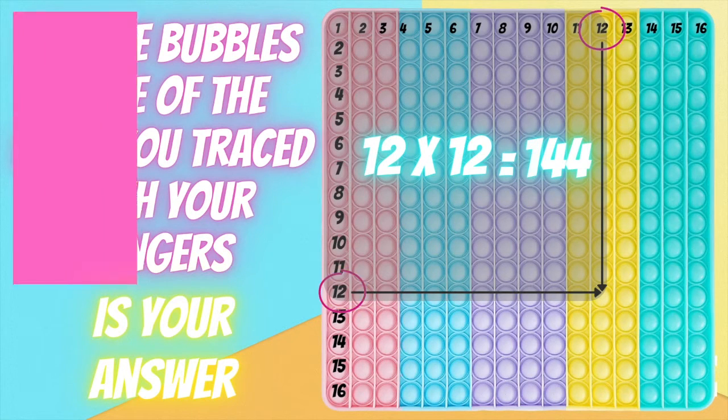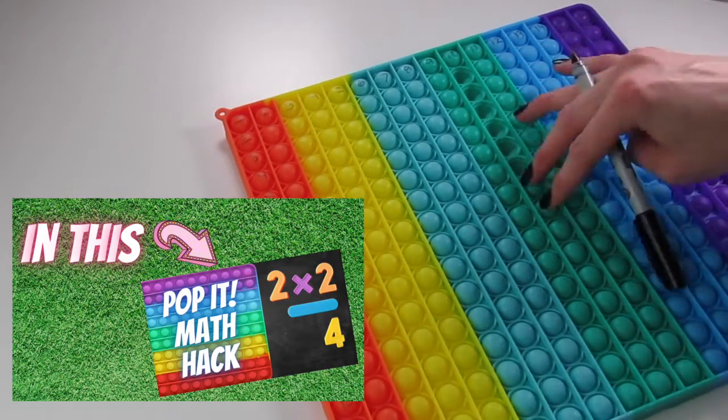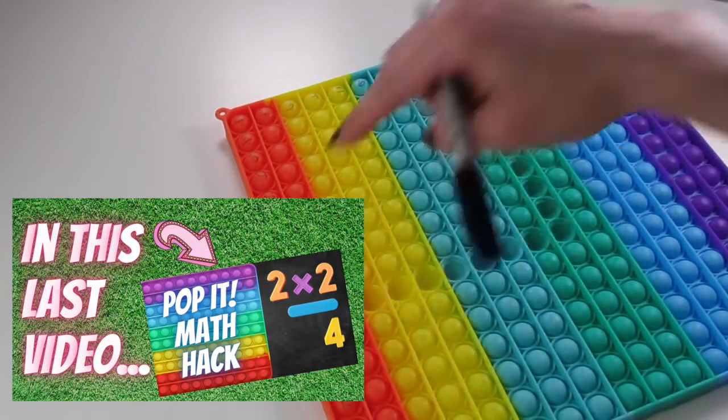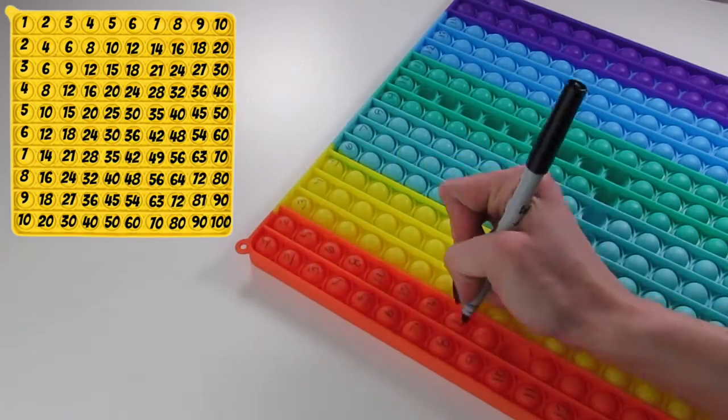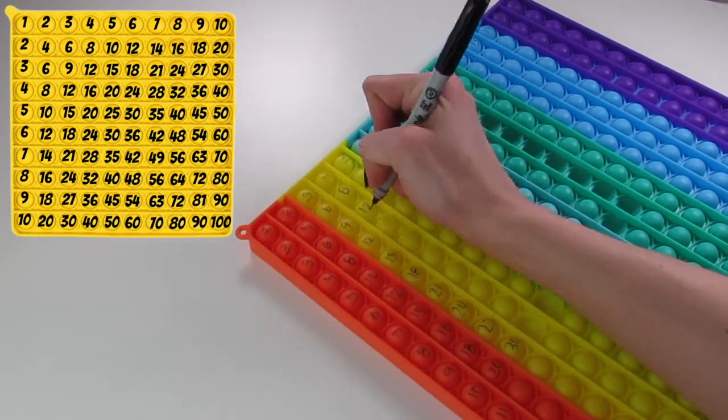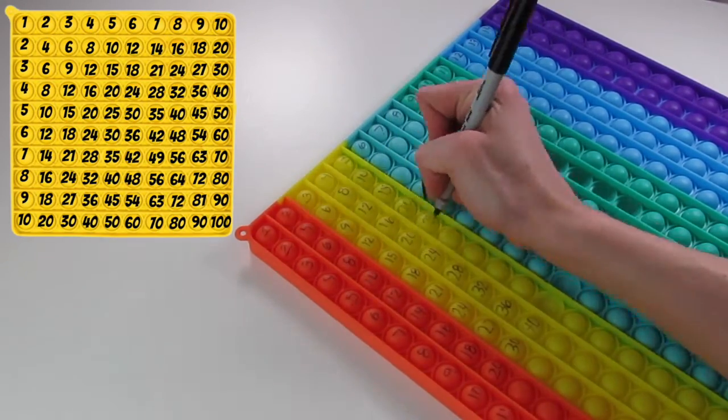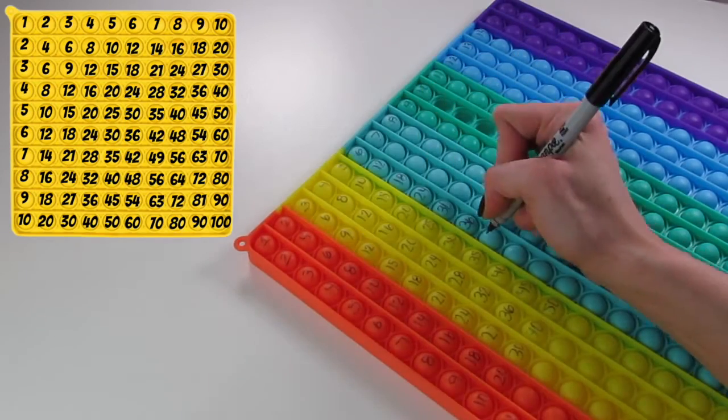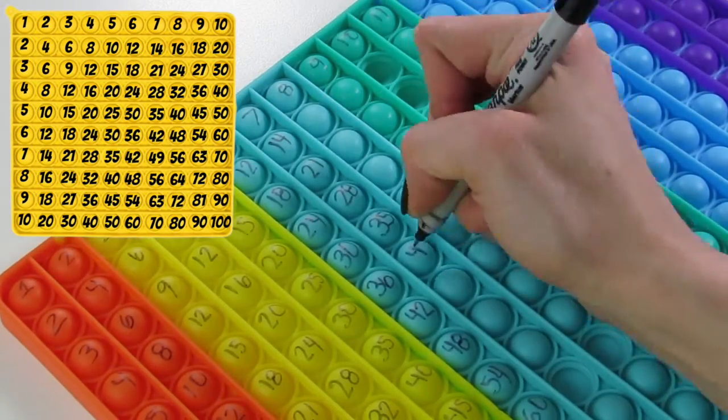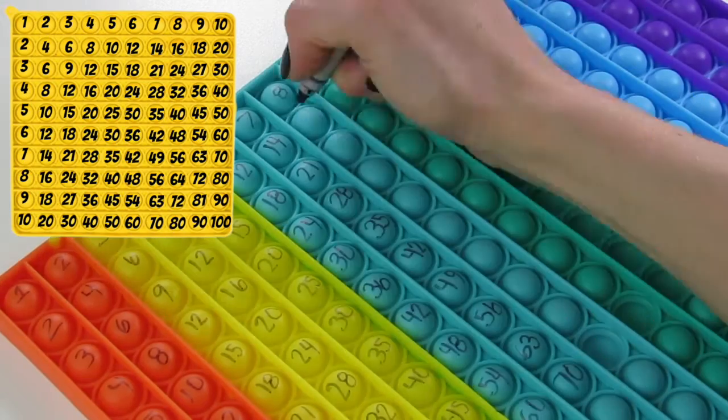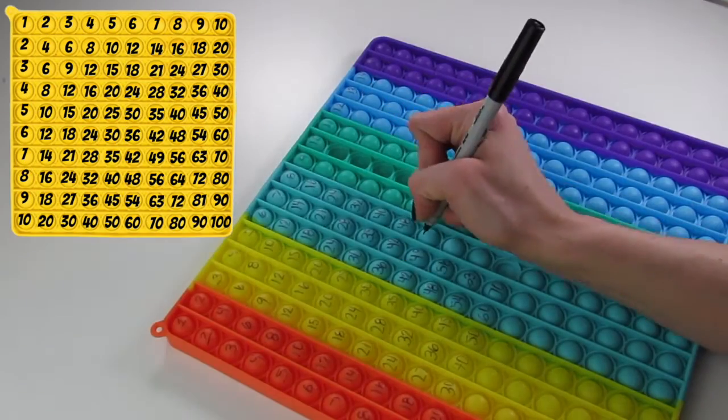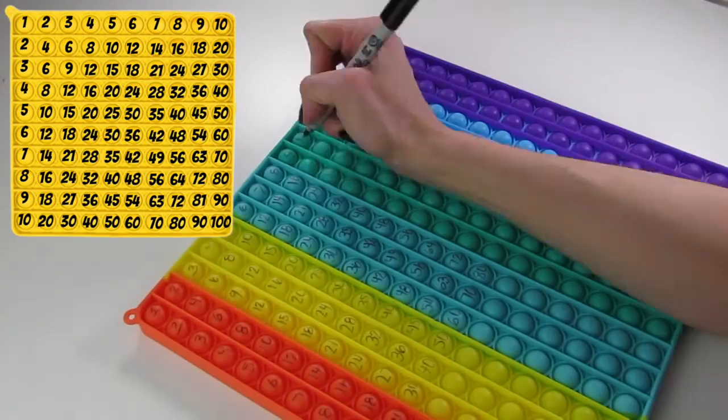In our last video, we did a 100-piece pop-it, and we did multiplication facts for 1 through 10, which looks like that square there. And here it is on screen. If you want, you can pause the video and take a screenshot of it, or pause and fill in your pop-it here like I'm doing.